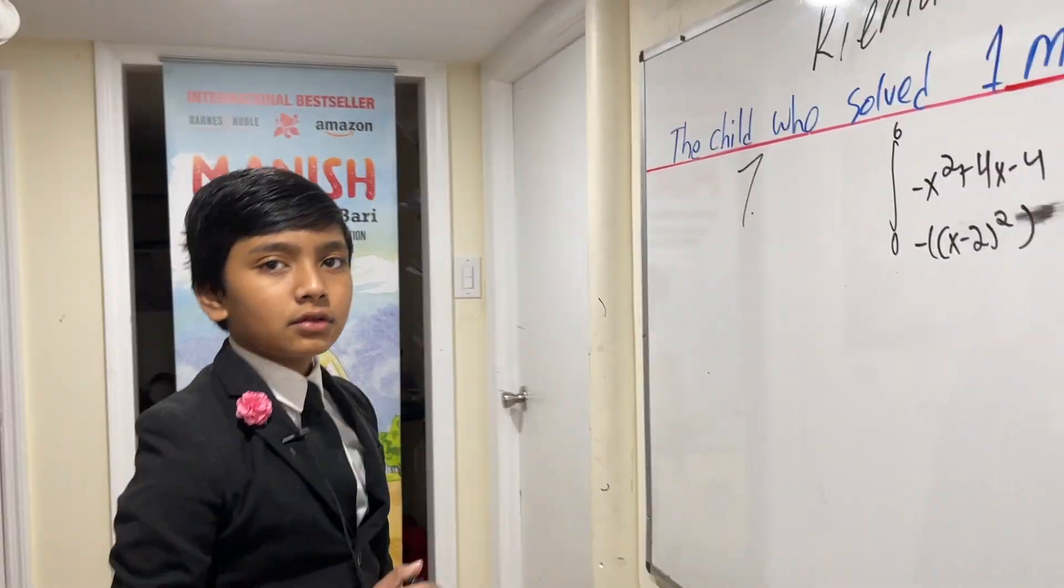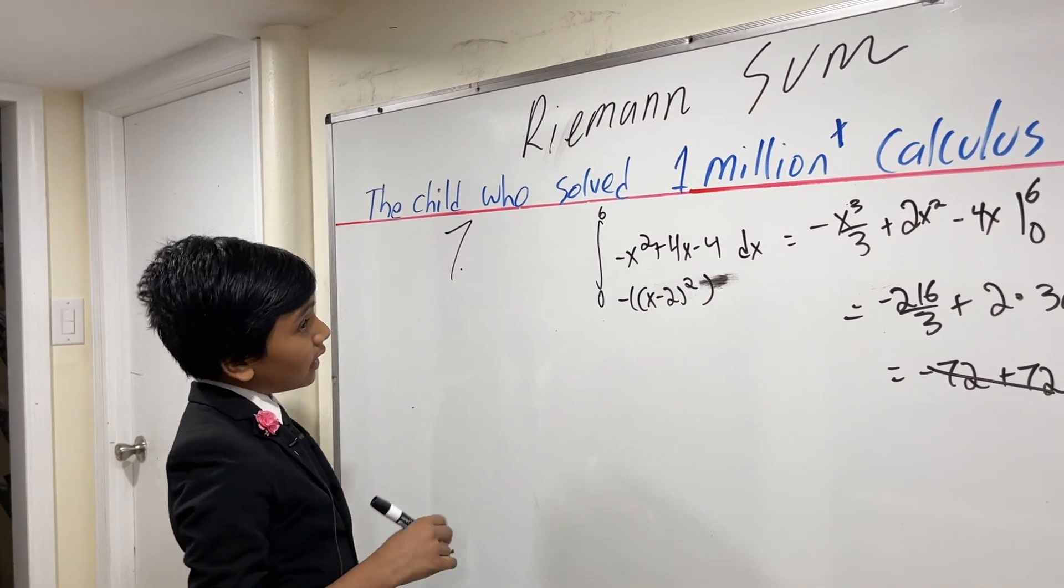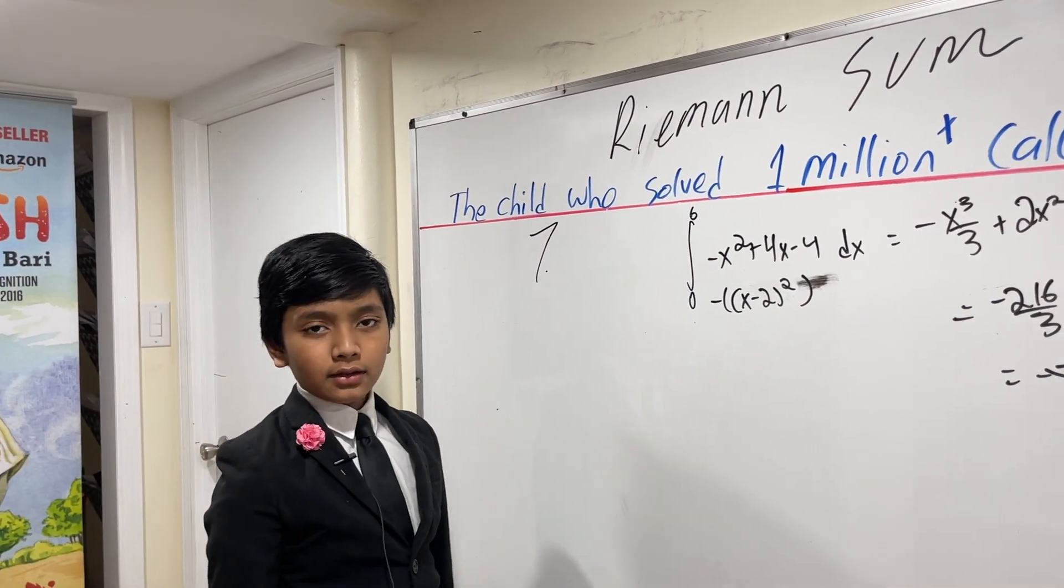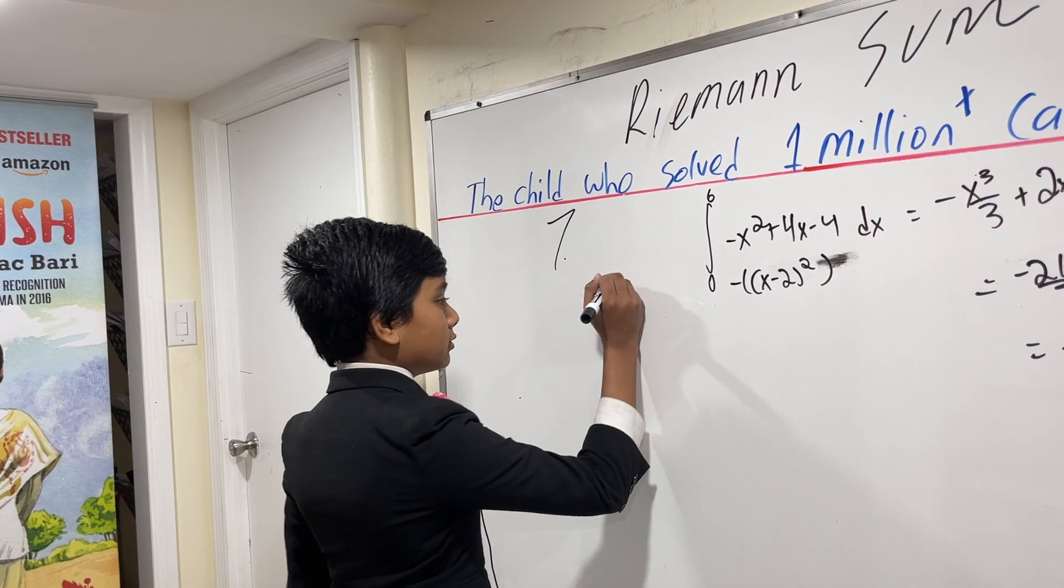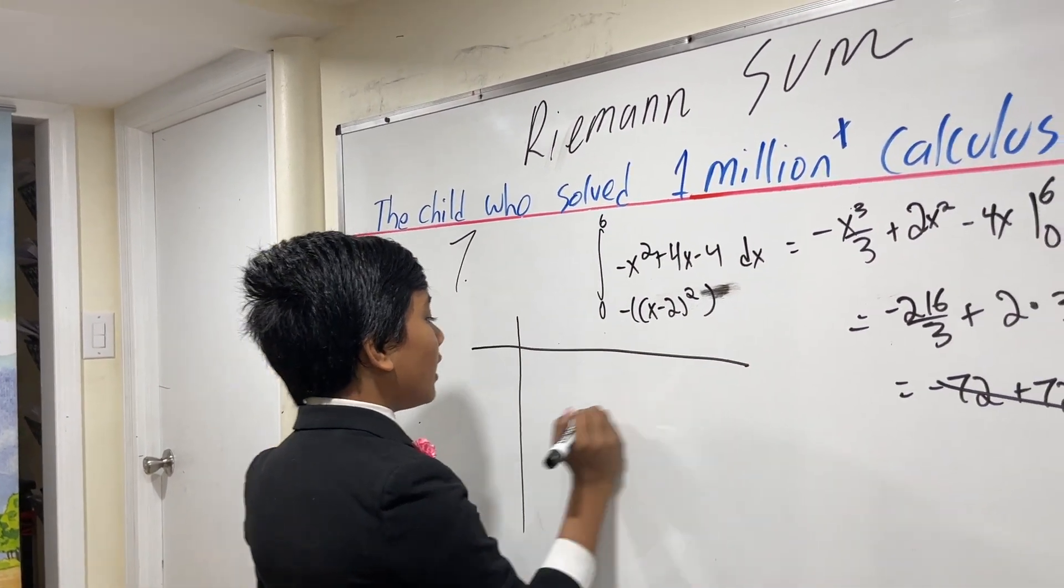So now let's actually get to our trapezoidal sum, and we could just do this formulaically, but we could actually also do it with a sketch as well.